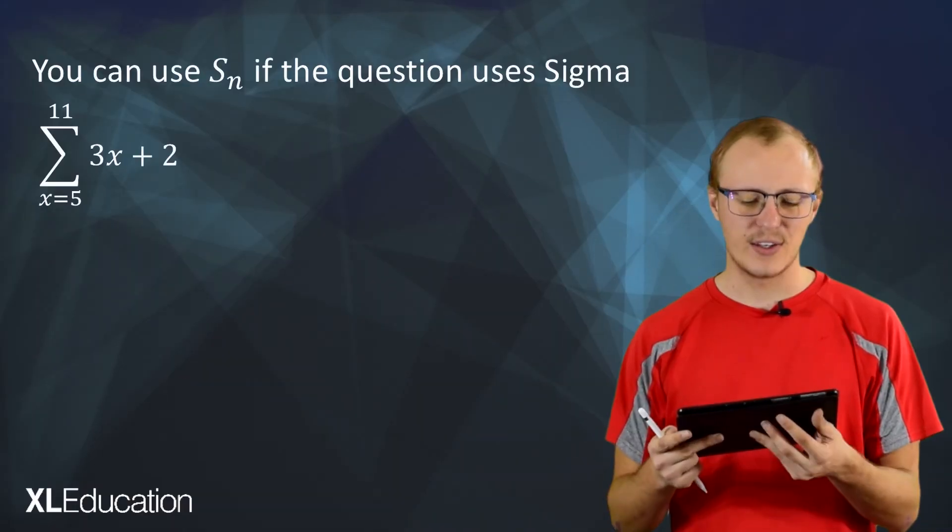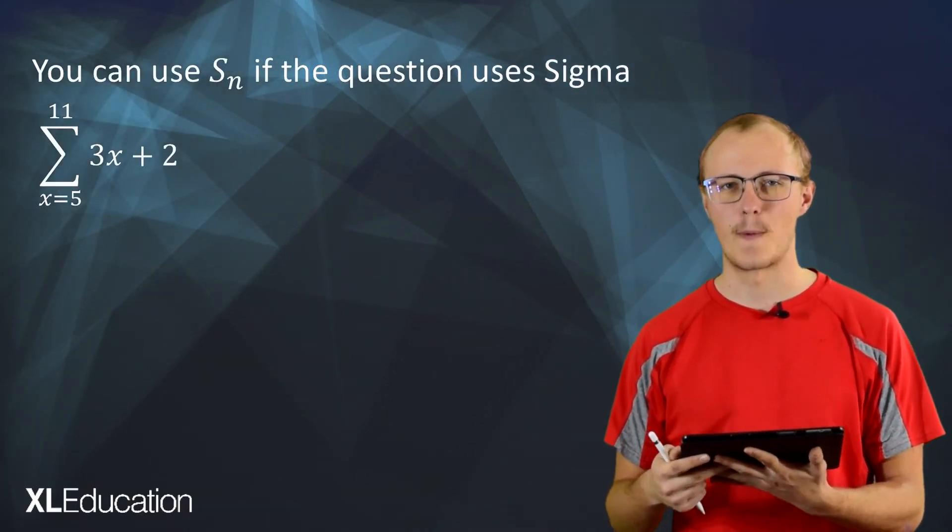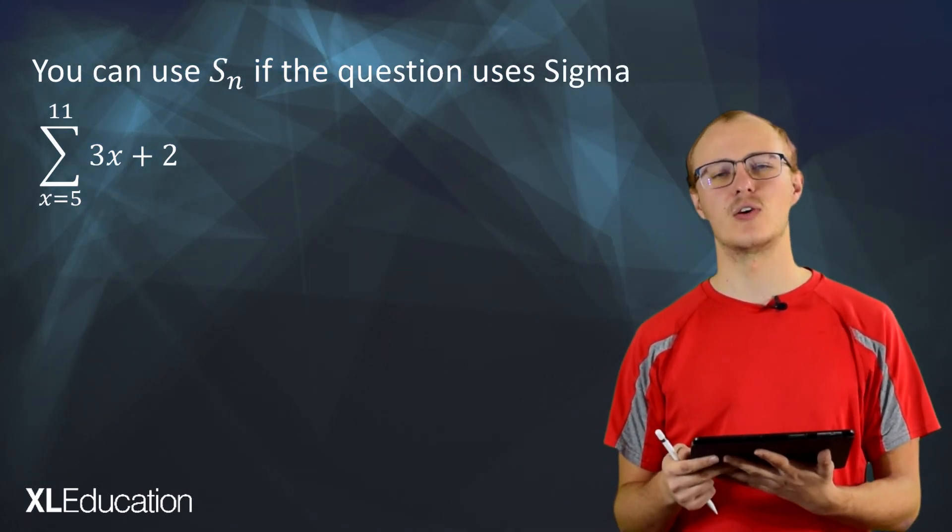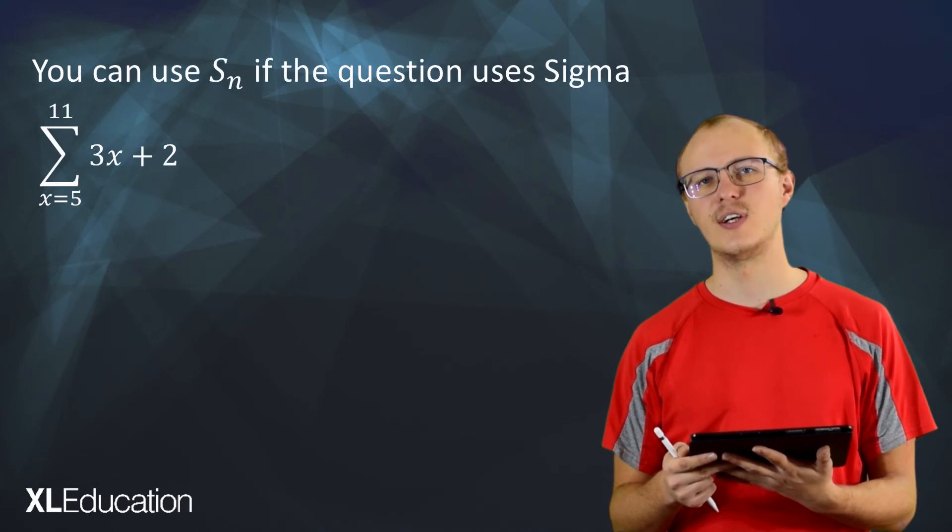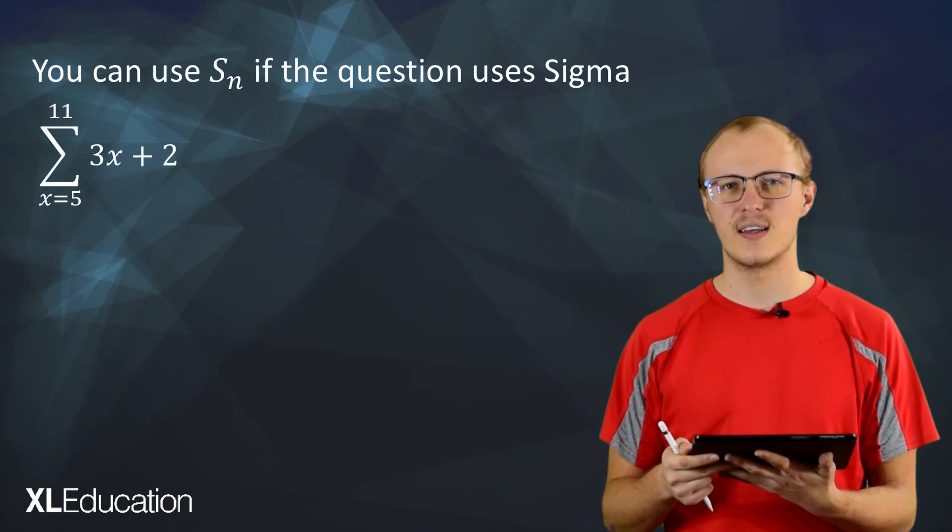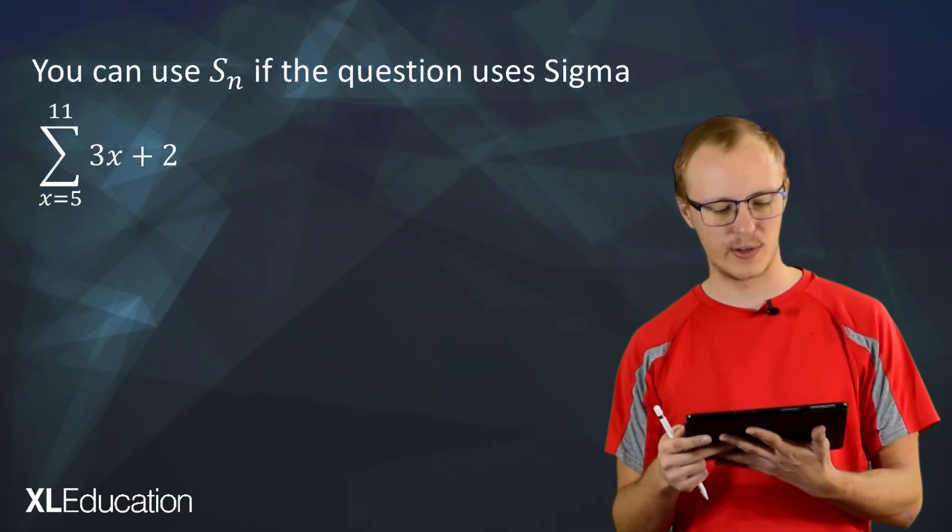So you can use s n if the question uses sigma. Why on earth would we do this? Well for sigma you need to go compute each and every term if you want to add it up the long way. So if we can use s of n instead of sigma then we're actually going to take a little bit of a shortcut.